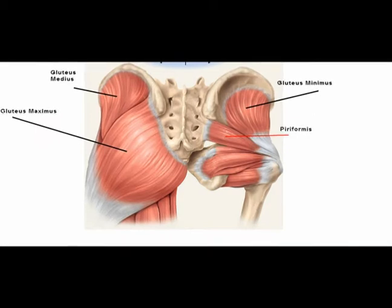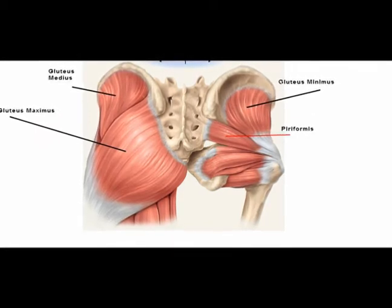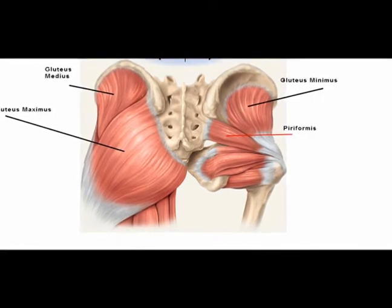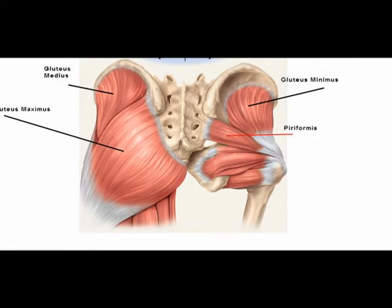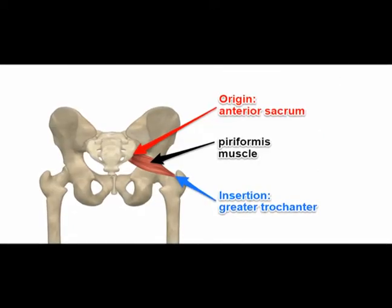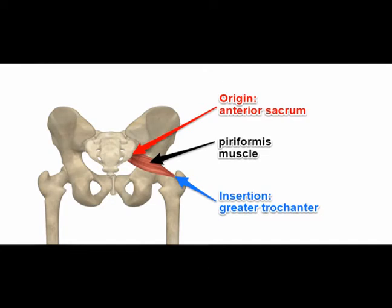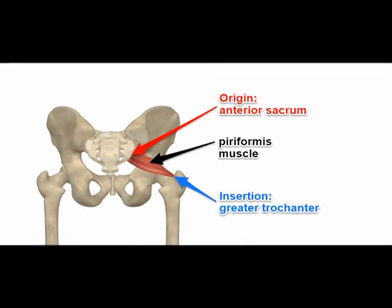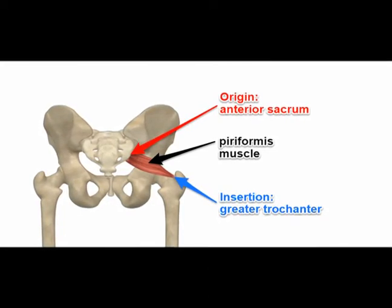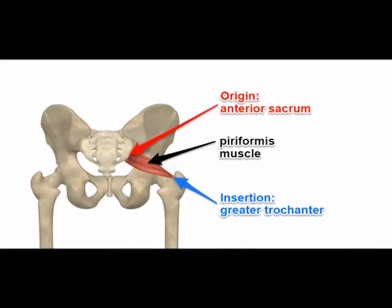The piriformis muscle is part of the lateral rotator group. When it contracts concentrically, it performs external rotation of the femur and abduction of the femur.